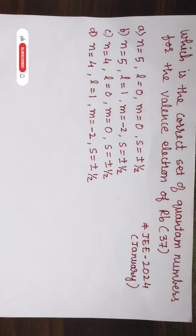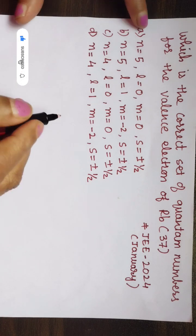Let's solve this question which was asked in JEE 2024 January batch. Which is the correct set of quantum numbers for the valence electron of rubidium, atomic number 37? So let us first write the electronic configuration for this rubidium element.